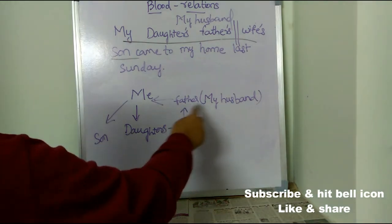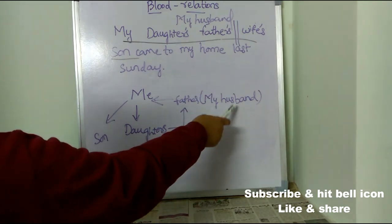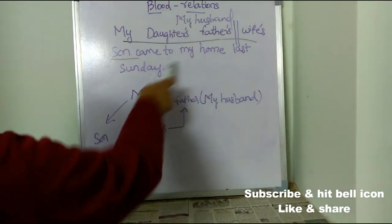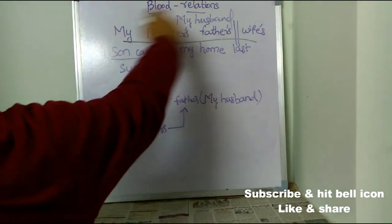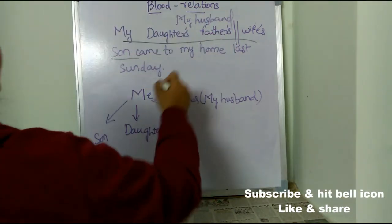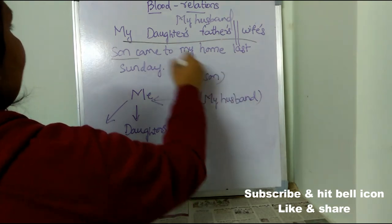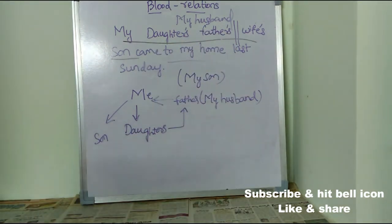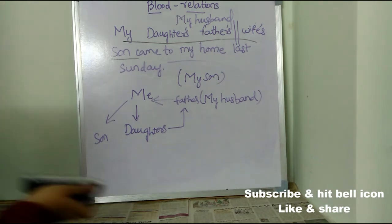My daughter's father is my husband. My husband's wife is me. My son — so after solving this entire statement, the answer is my son. My son came to my home last Sunday. See how easy it is if we just apply some logic or draw it pictographically — we can solve any problem with ease.